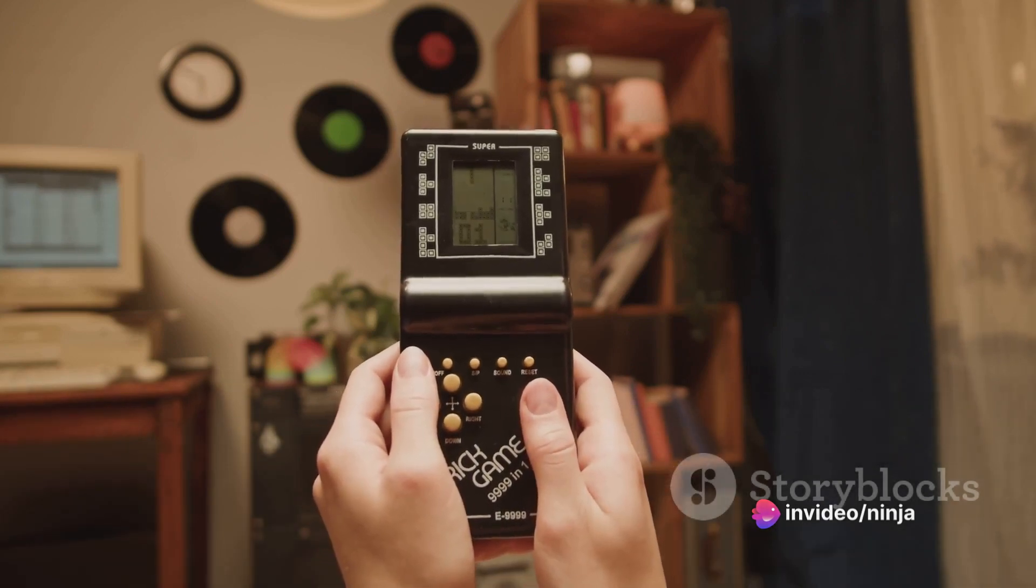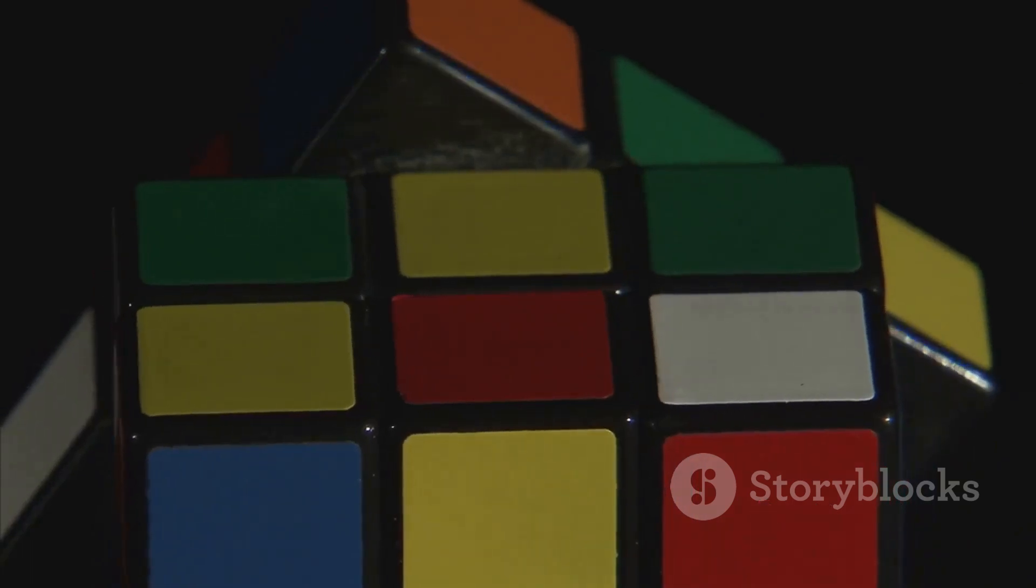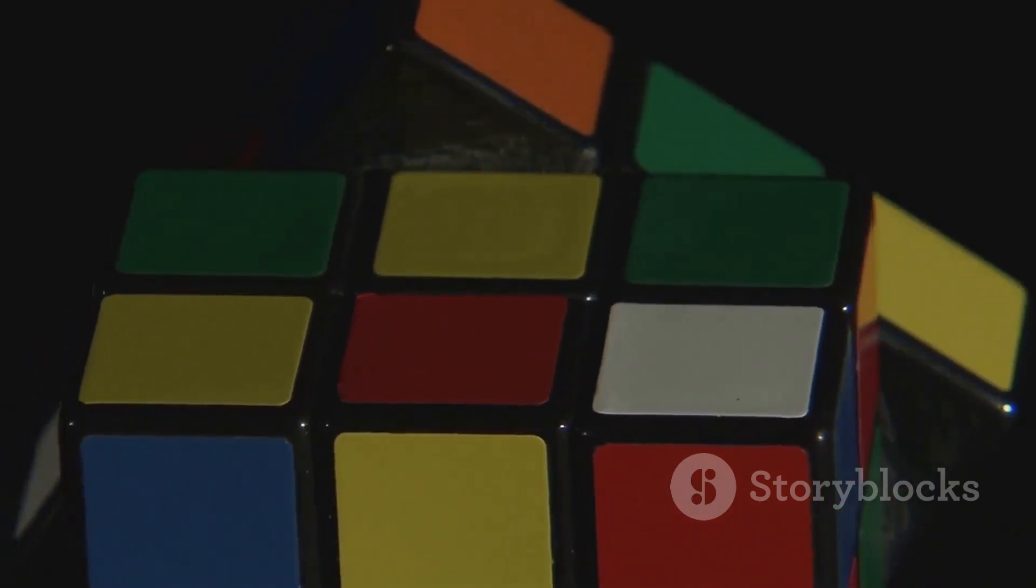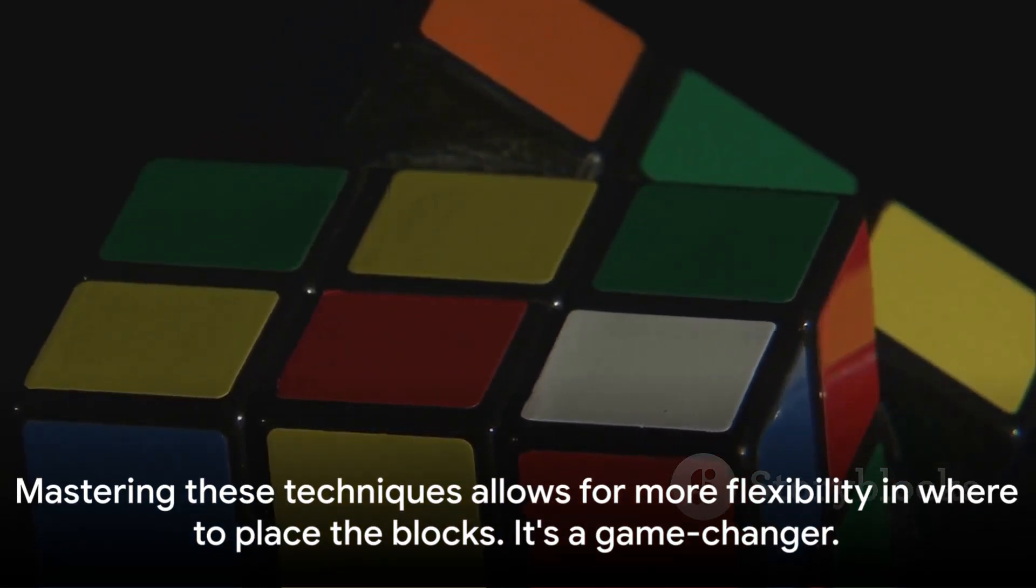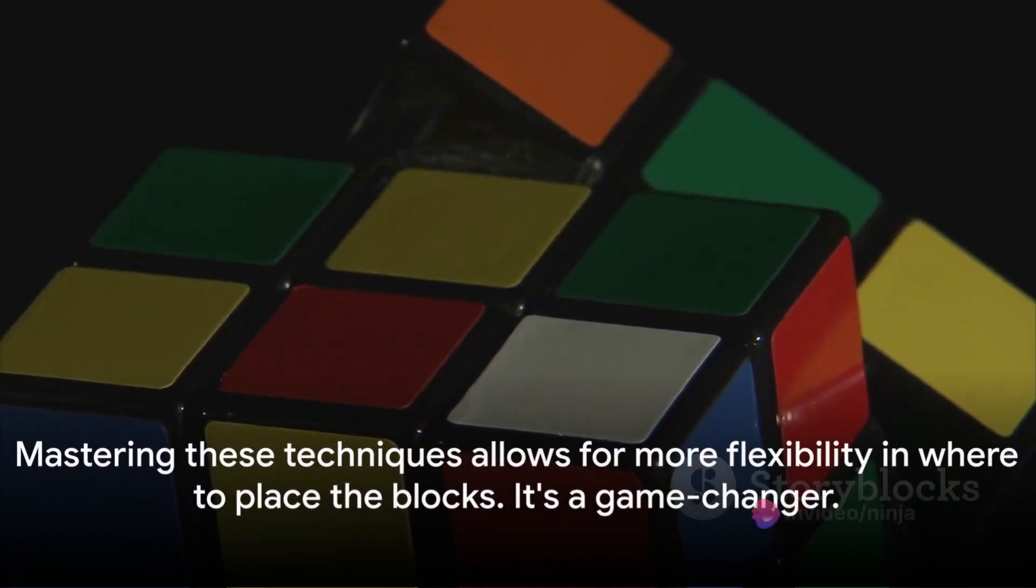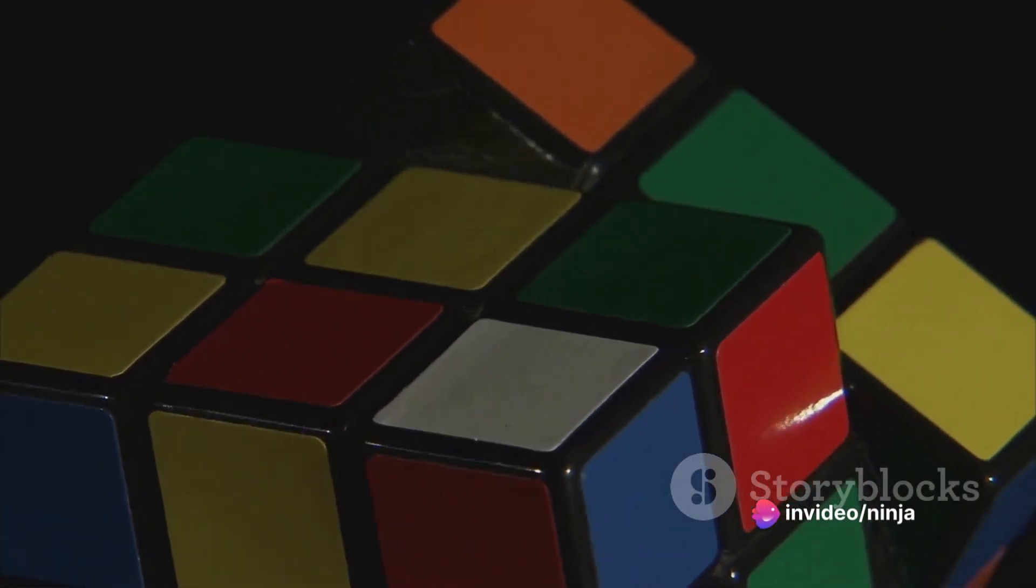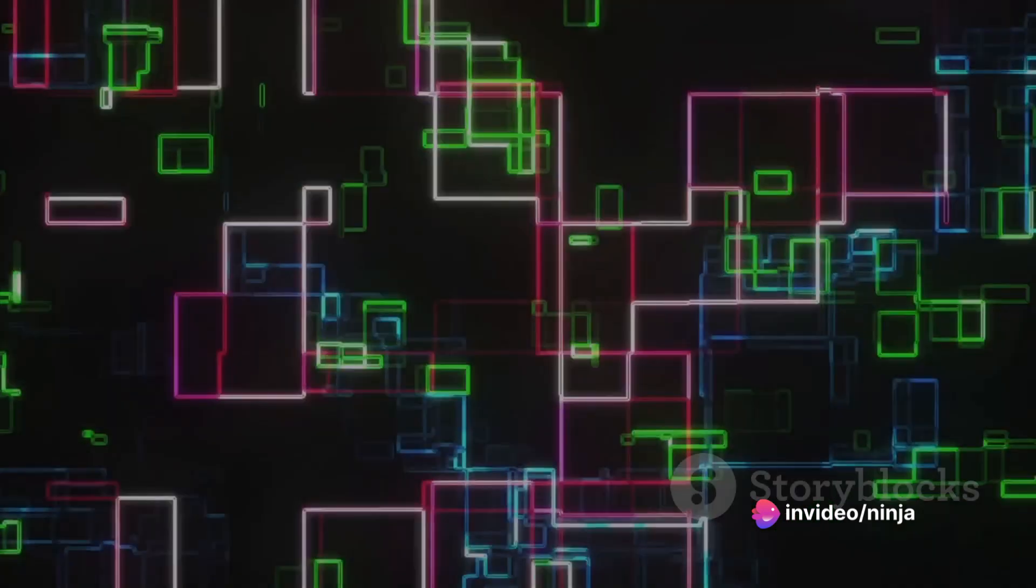Secondly, learn to tuck and spin. Tucking is when a player moves a block under another overhanging one. Spinning, meanwhile, is rotating a block to fit into a space. Mastering these techniques allows for more flexibility in where to place the blocks. It's a game changer.